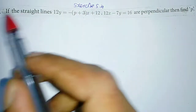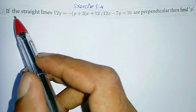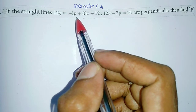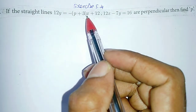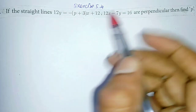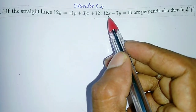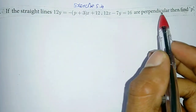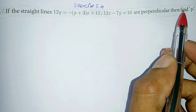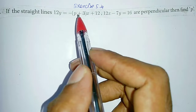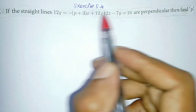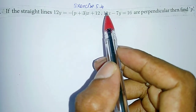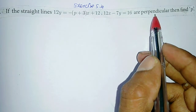Exercise 5.4 Q4. If the straight line 12y is equal to minus of (p+3) into x plus 12, and 12x minus 7y is equal to 16 are perpendicular, then find p. We are given 2 line equations, and those 2 lines are said to be perpendicular.